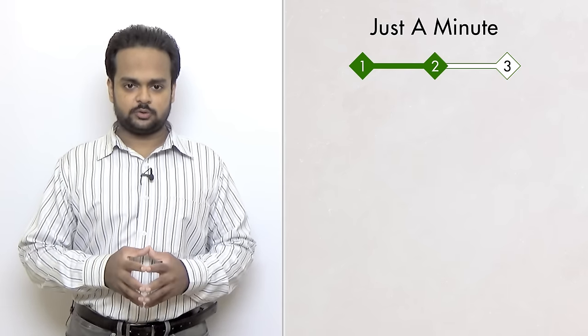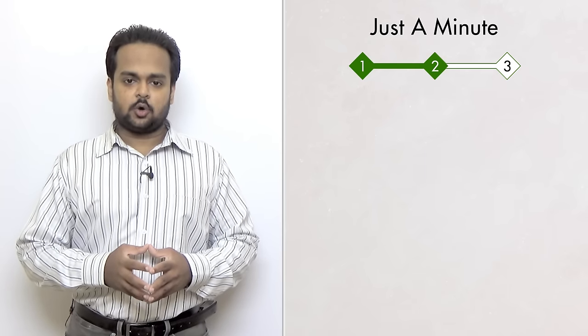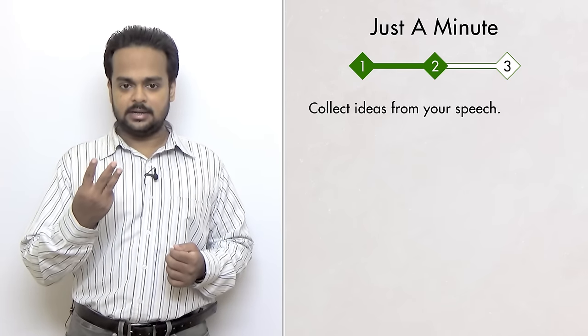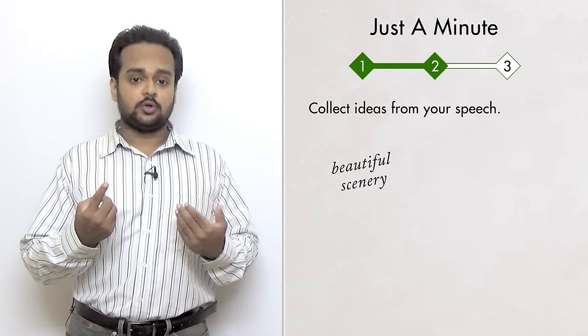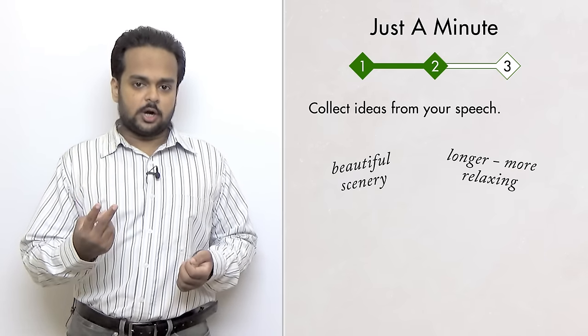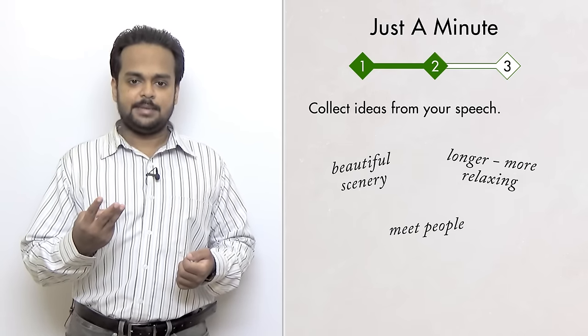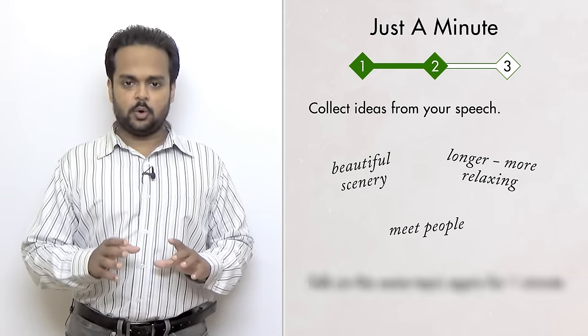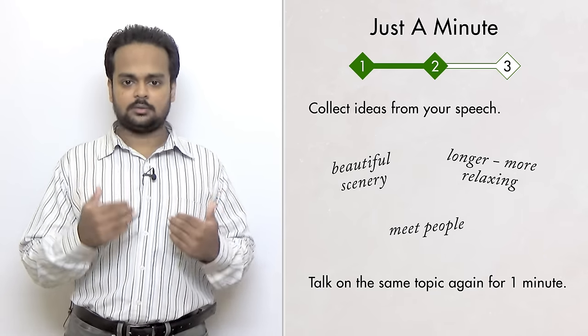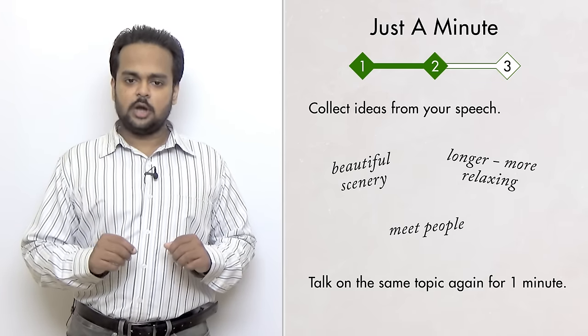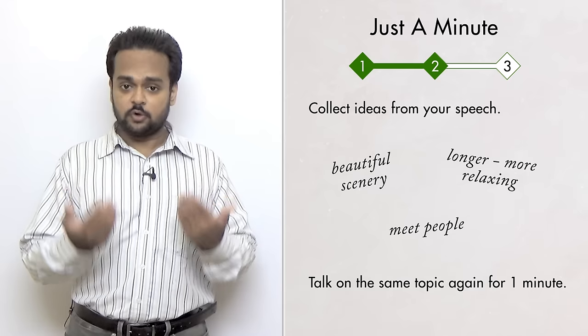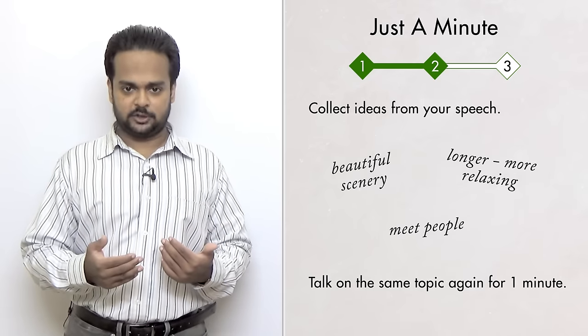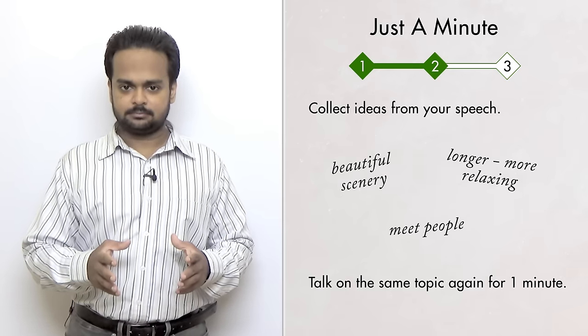The first part of stage two is making notes. So you can use a paper and pen now. And you're going to think back to the speech that you just gave and collect ideas that you came up with. In my speech, I remember that I had three ideas. The first was that on train journeys, you get to see a lot of beautiful scenery. The second idea was that train journeys are longer, so they're more relaxing. The third idea was that you get to meet interesting people and make friends. So once you have these ideas down, you're going to repeat the exercise. That means you're going to set your timer for one minute and you're going to speak again on the same topic. But now you can use your notes to guide you. You will notice that this time you are actually able to speak more fluently because you have some good ideas on paper and you will be able to expand on your ideas and give more information. Once the timer hits one minute, you stop and we move on to stage three.